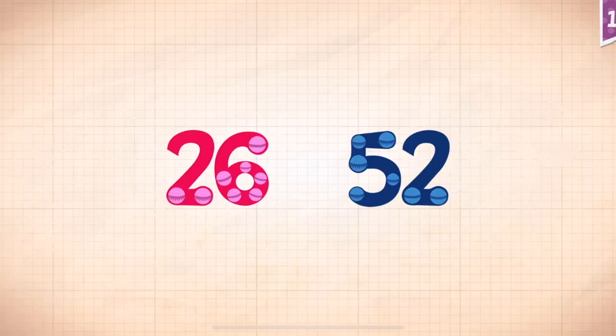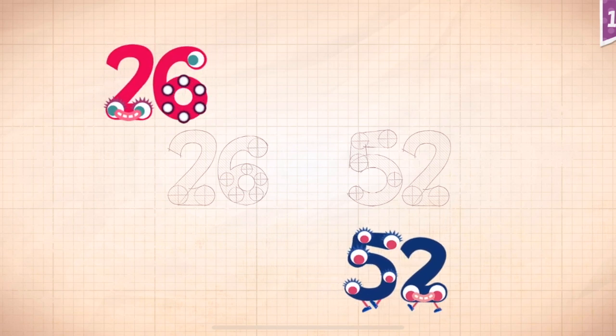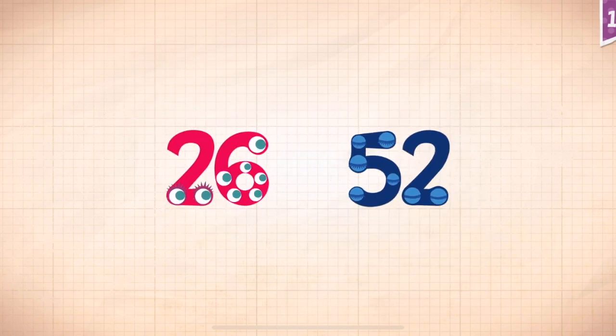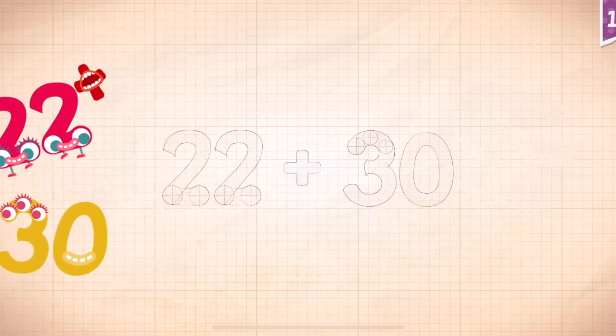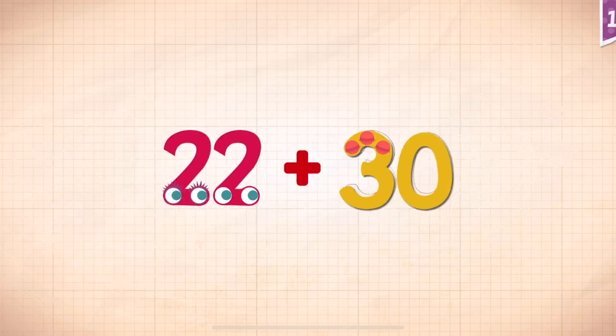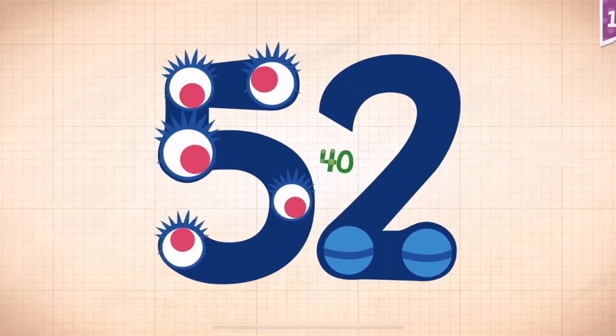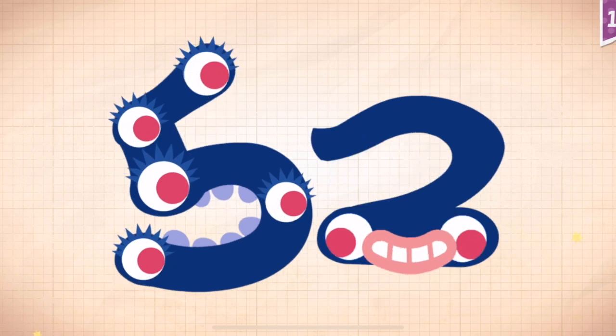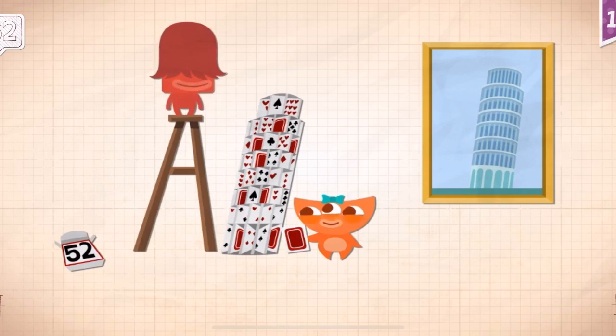52. 22 plus 30 equals 52. Touch the monster. 10, 20, 30, 40, 50, 51, 52! Abby and Francis made a house using all 52 cards in the deck.